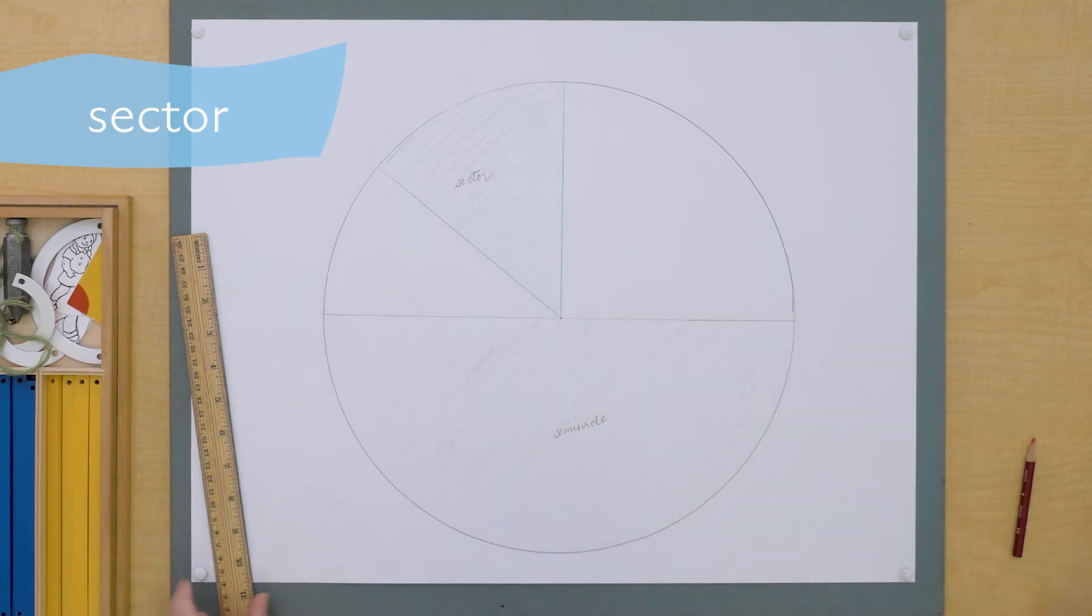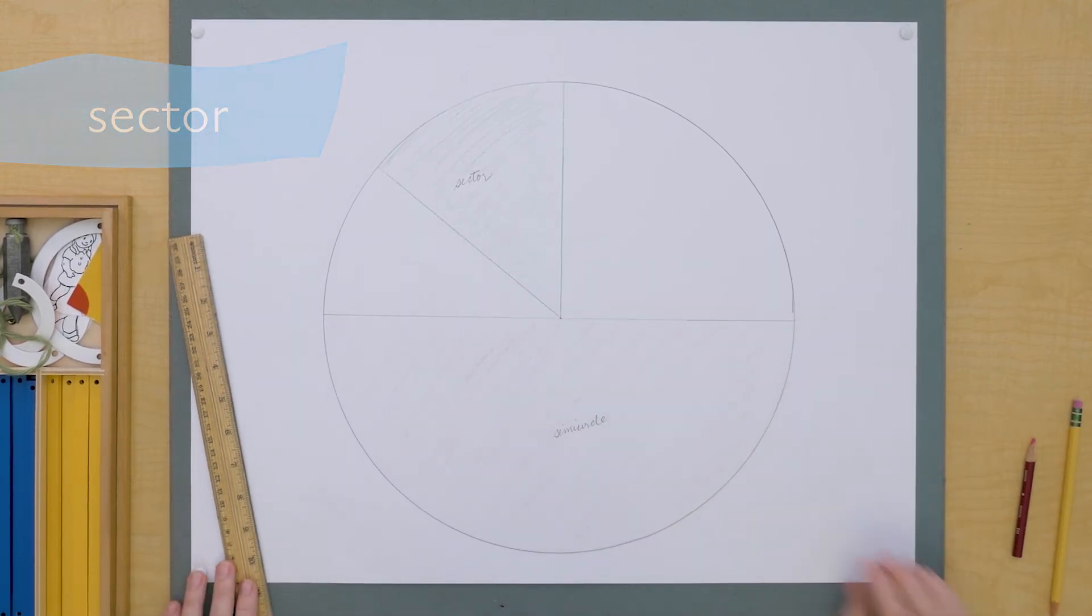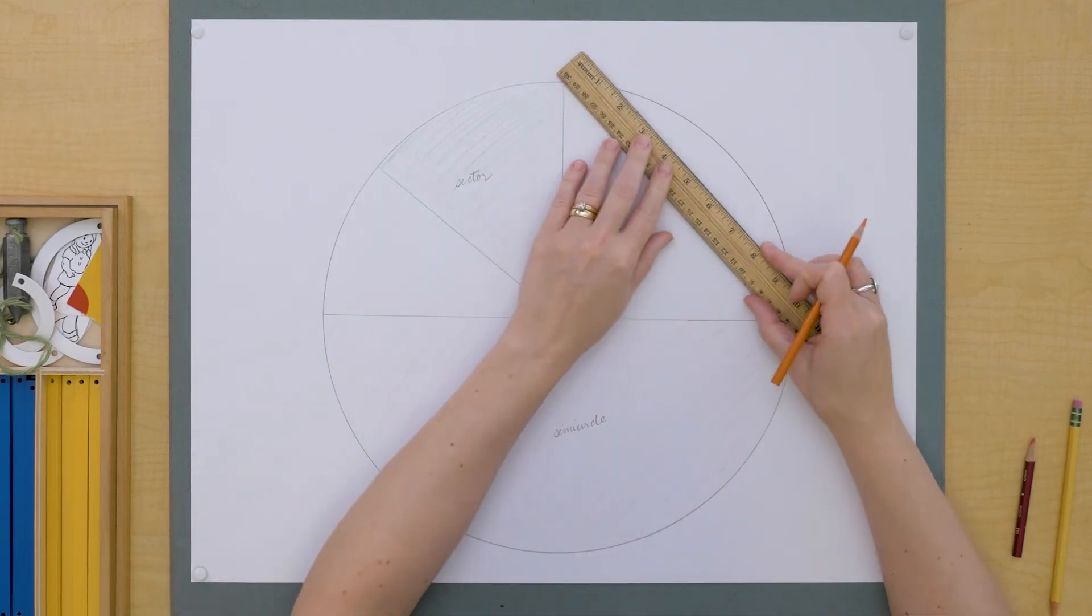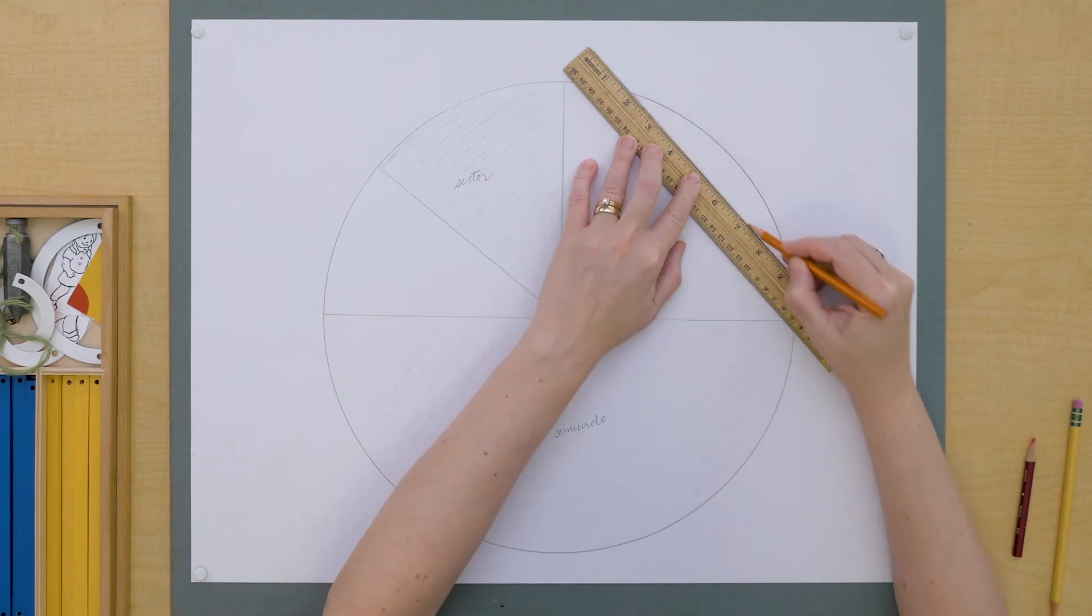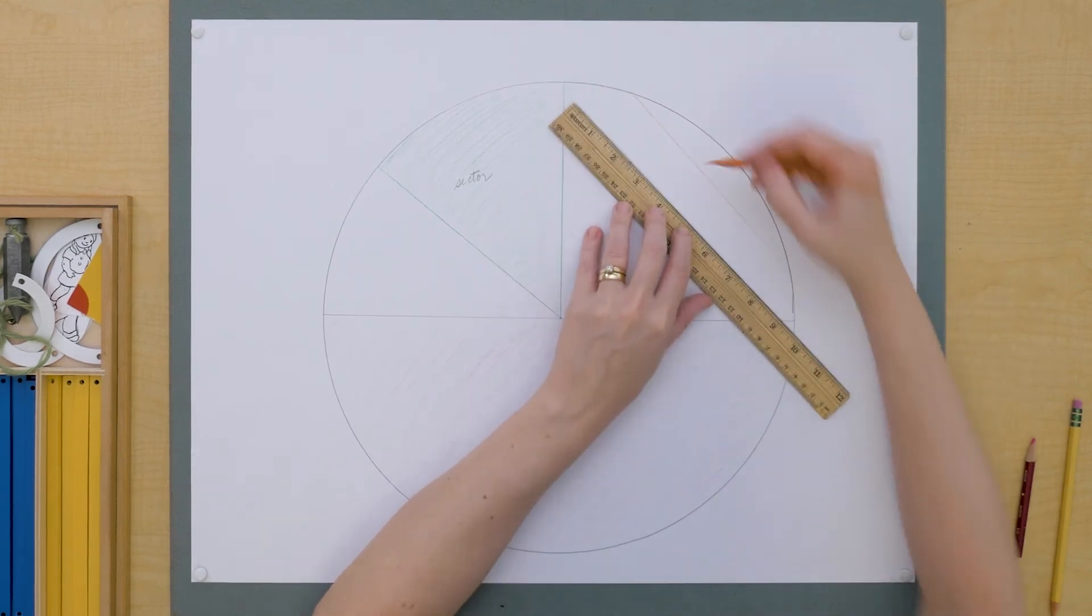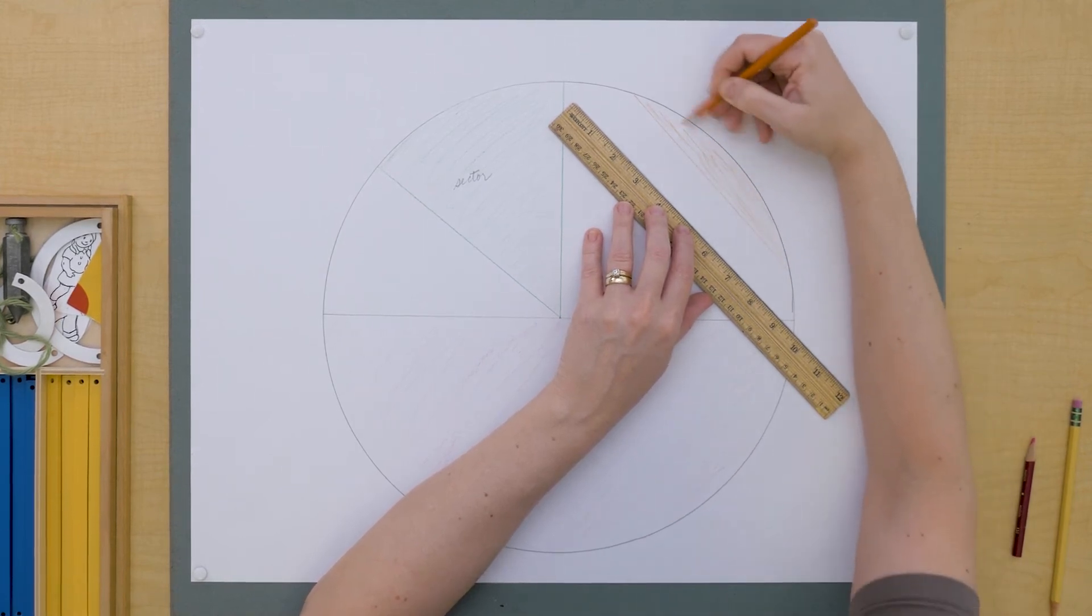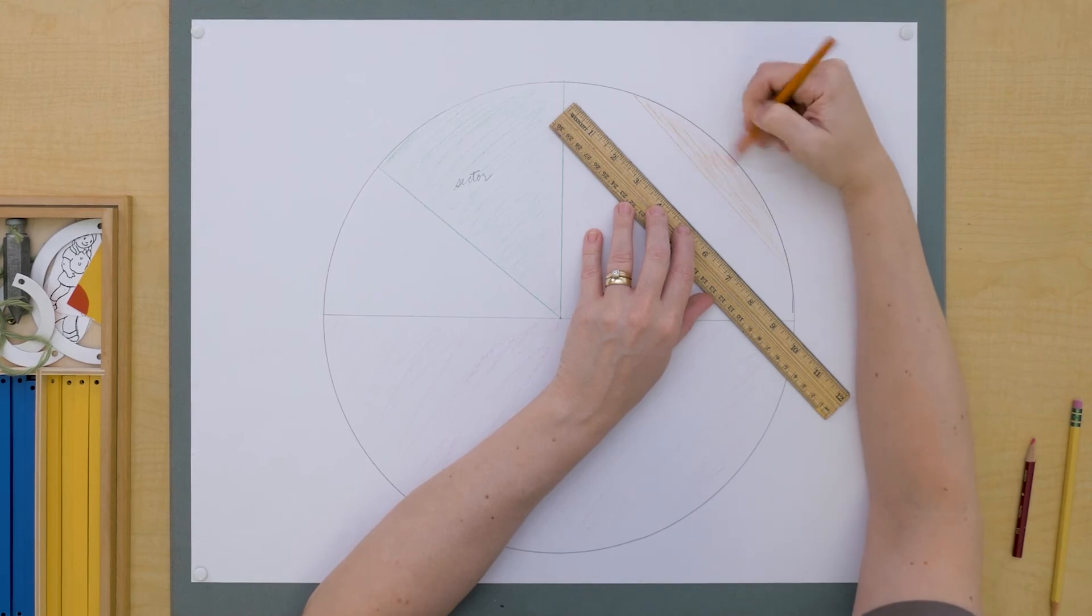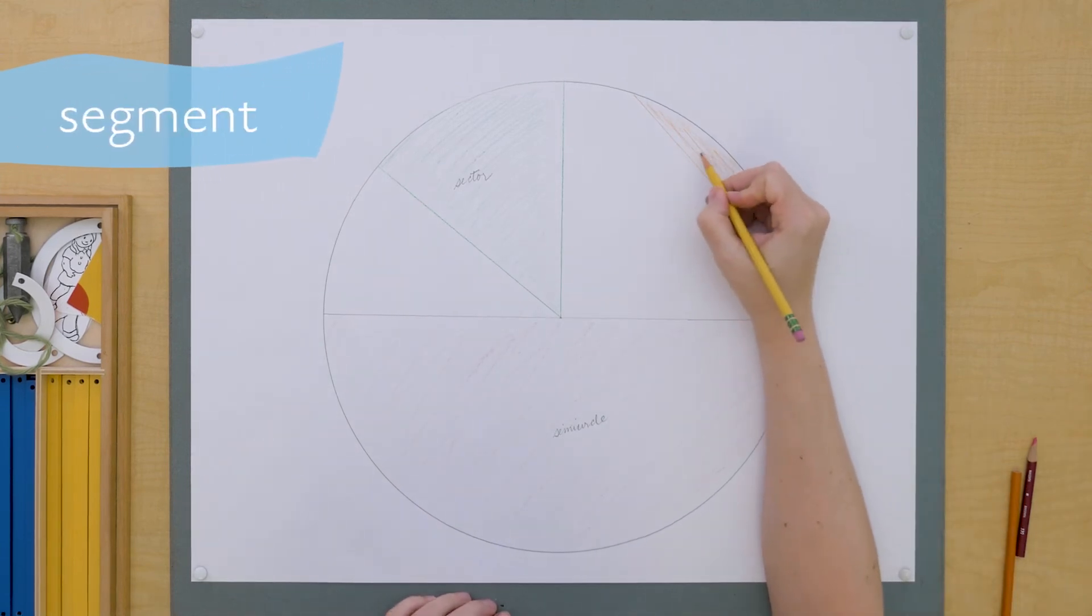Or sometimes you'll hear it called a circular sector. So this is a sector and this part of the circle here, this space created by a chord and part of the circumference is called a segment.